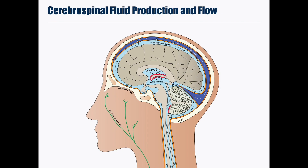Starting with an overview of cerebrospinal fluid production and flow. Cerebrospinal fluid, or CSF, is predominantly produced from blood through the choroid plexuses that are present in the lateral, third, and fourth ventricles, shown here in red. A smaller amount of CSF is also produced by the ependymal cells that surround the ventricular system.